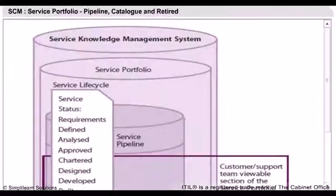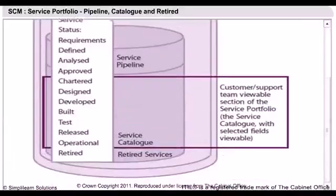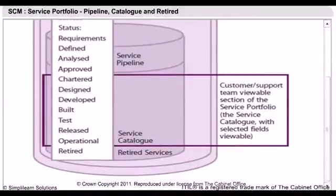We will now try to understand the structure of the service portfolio and also the relationship between service portfolio and service catalogue. A service portfolio represents the complete set of services that is managed by a service provider. It is used to manage the entire lifecycle of all services and it is part of the overall service knowledge management system. It has three parts.